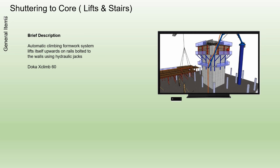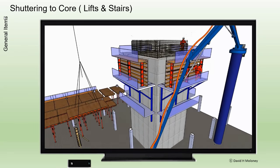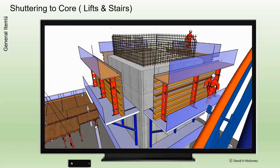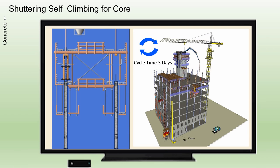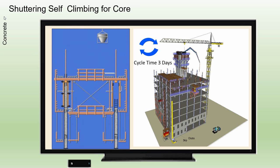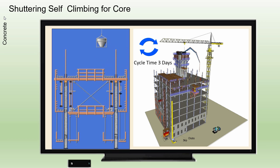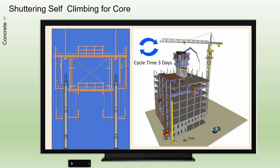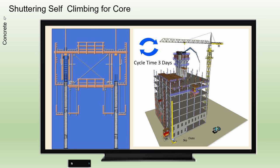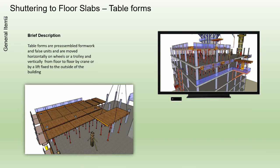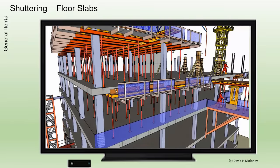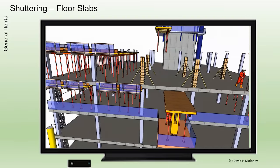Core Walls: A climbing formwork system lifts itself upwards on rails bolted to the walls using hydraulic jacks. Floor Slabs: Table forms are pre-assembled formwork and falsework units that are moved horizontally on wheels or with a trolley, and moved vertically from floor to floor by crane or by a lift fixed to the outside of the building.